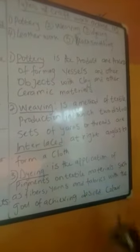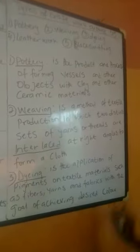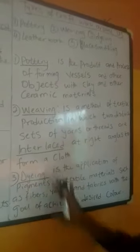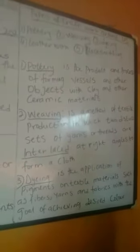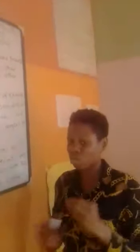Dyeing is the application of pigments on textile materials such as fiber, yarns, and fabric, with the goal of achieving a desired color. I want you to try this — tell your mom to get you a dye and do some designs. You need to have a vision of the style you want created on that material. A dye comes with many different colors, so when you apply the pigment on textile, you create a color pattern — like the shirt I'm wearing, where both weaving and a color pattern are beautifully applied.